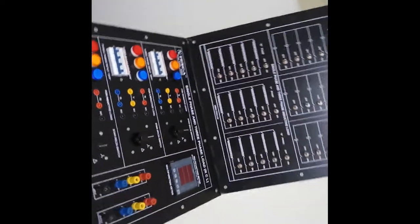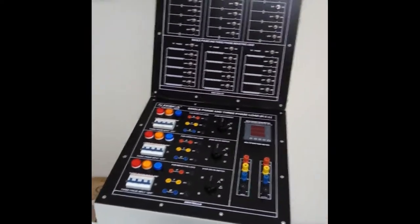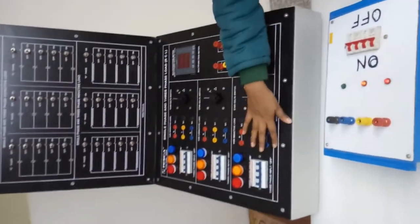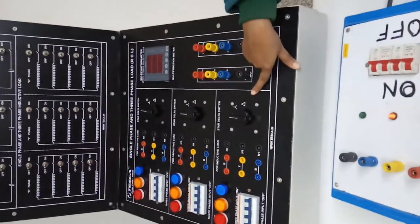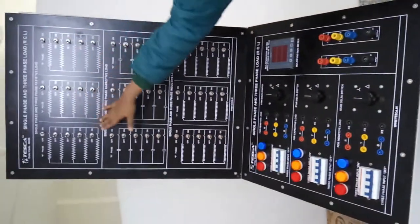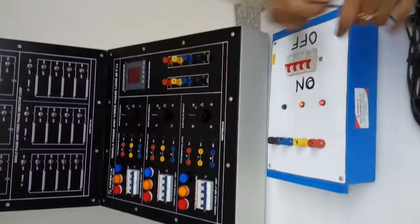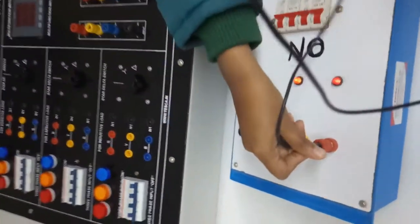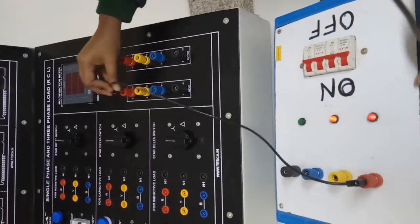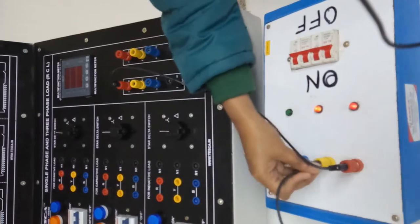Now we will see how this works. Before any experiment, make sure all the MCBs are in the off position, the three selector switches are in the off position, and all switches are in the off position. Now first we will give the power supply — connect R to R, Y to Y, and B to B.